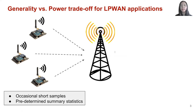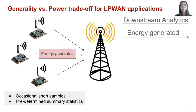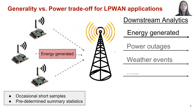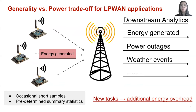Let's consider a solar farm example. A company wants to deploy a wireless sensor network on a farm to monitor solar power production, and the sensors are used to send daily reports on energy generated. Once the sensors are programmed and deployed, the company may also be interested in collecting new statistics, like detecting power outage and recording weather events. Today, it is challenging to support such general analytics in a low-power manner. The operators have to decide which set of analytics tasks need to be supported before deployment. If we want to add new tasks at runtime, there will be additional communication and energy overhead.